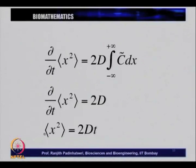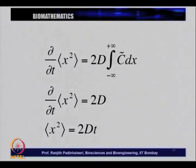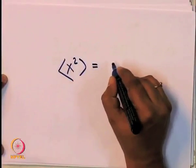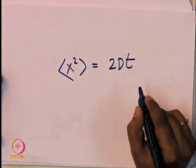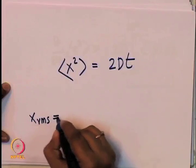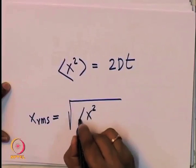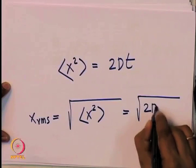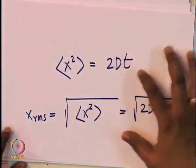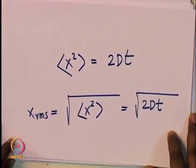This is a very important and famous relation as far as diffusion is concerned, widely used in many contexts in biology and other fields. We get x²-average equals 2Dt, or equivalently, x_RMS equals the square root of 2Dt. This is called the Einstein relation or the diffusion RMS distance formula.